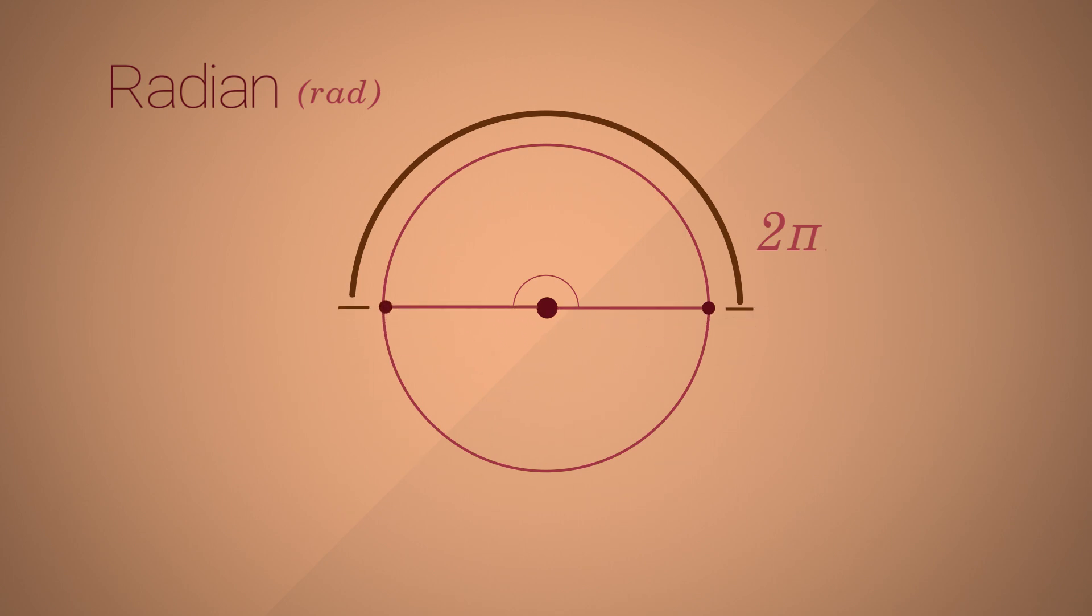Half circle, where previously referred to as 180 degrees, is π radian. Similarly, a quarter circle is π over 2. So you can see a pattern here. The length of the radian or the radian angle is always expressed as a ratio of π.